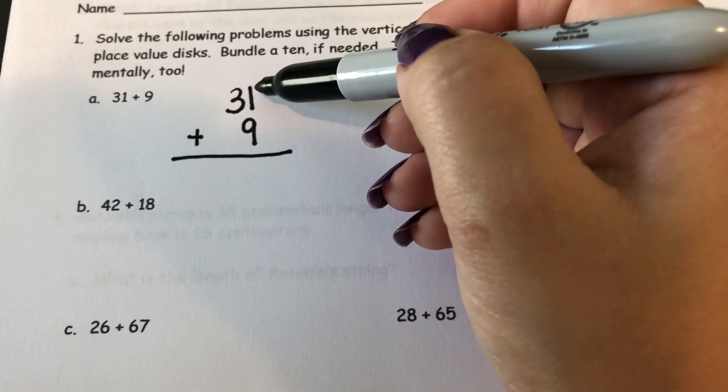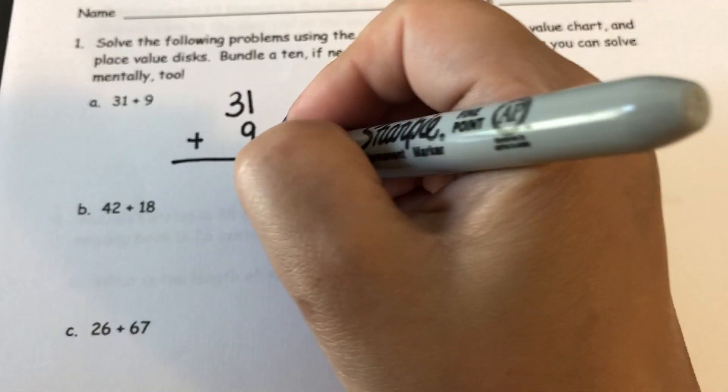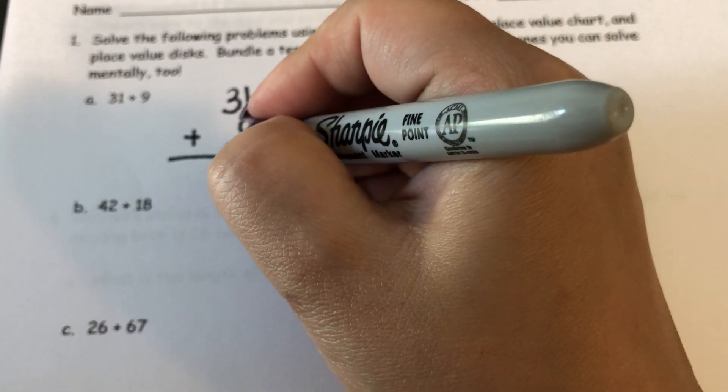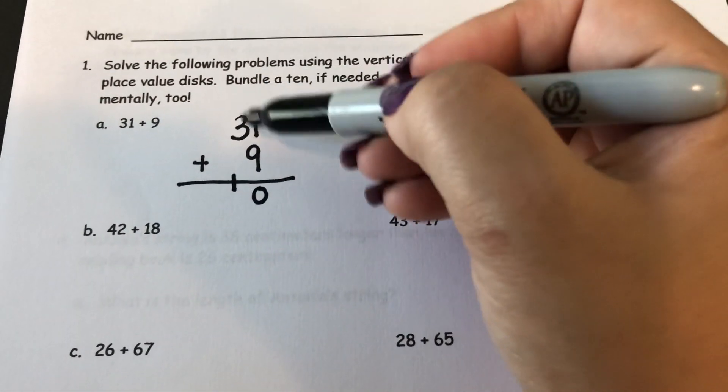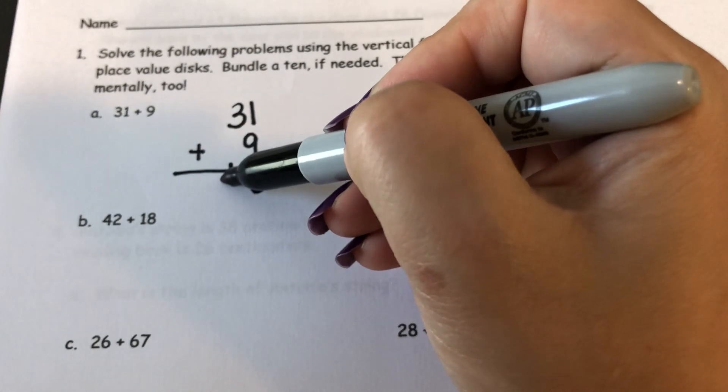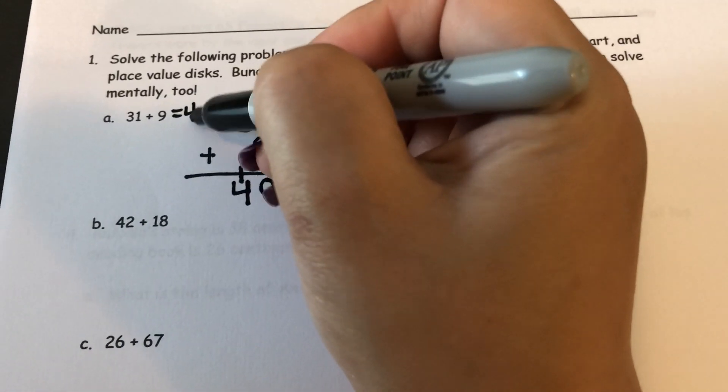Alright, here's my vertical form. 9 plus 1 is 10. If I'm thinking about a 10, I know there's a 0 in my ones place and a 1 in the tens place. Then I can add my tens column up. 3 tens plus 1 ten is 4 tens. So this gives me an answer of 40.